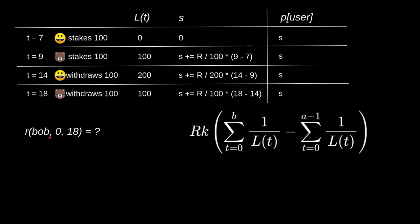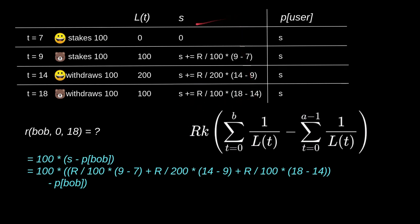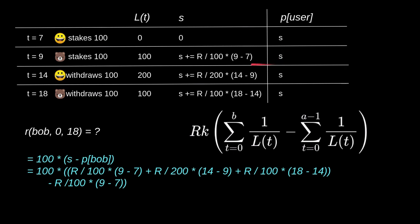For Bob, withdrawing at t equals 18 with 100 tokens staked, we use the same equation. The value of `s` for Bob is the summation of all the expressions, and `p(bob)` was stored the last time Bob interacted with the contract. Substituting and simplifying the math, Bob receives 6.5r.